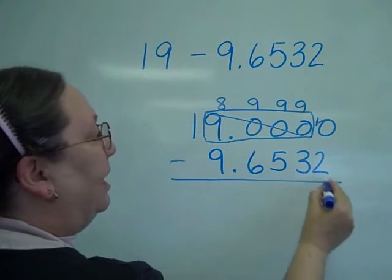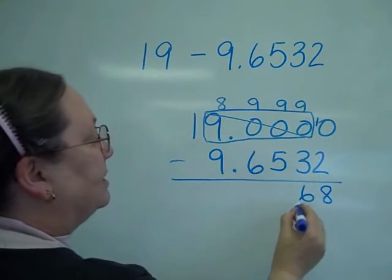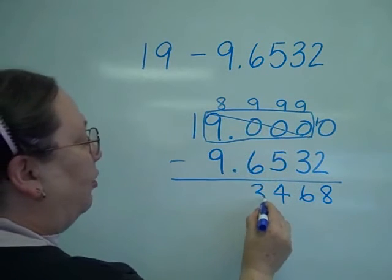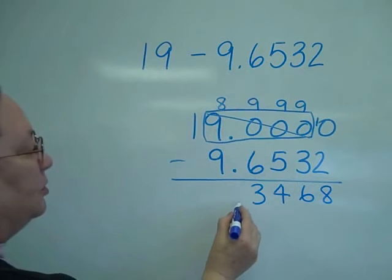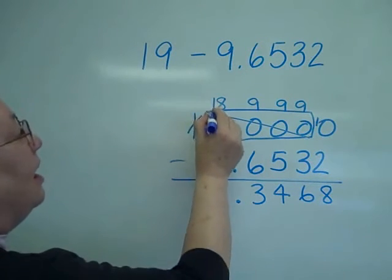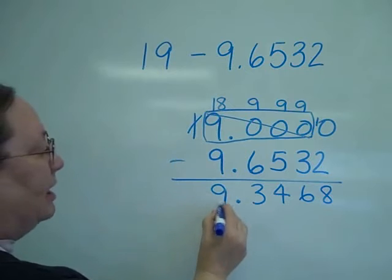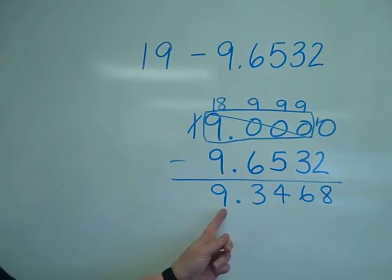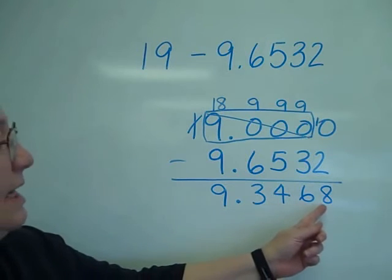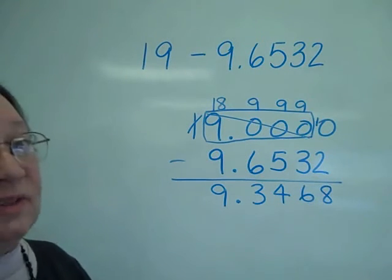Ten minus two is eight. Nine minus three is six. Nine minus five is four. Nine minus six is three. Drop that decimal straight down. And 18 minus nine is nine. So my answer is nine and 3,468 ten thousandths.